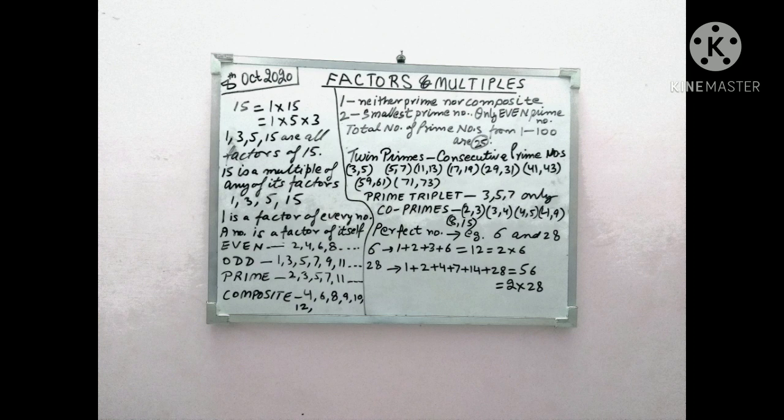Next we have prime numbers. Each of the numbers which have exactly 2 factors, namely 1 and itself are called prime numbers. For example, 2, 3, 5, 7, 11, 13, 17, 19, 23 and so on.